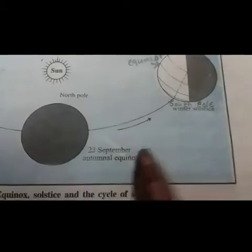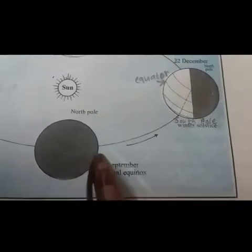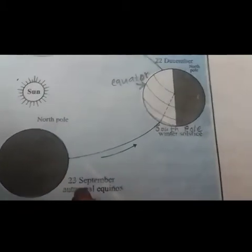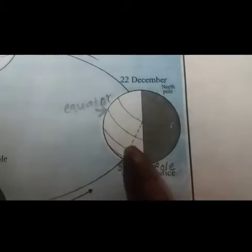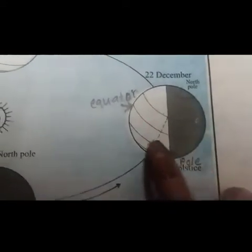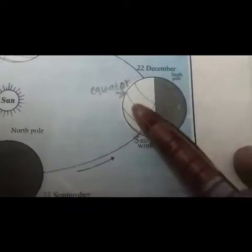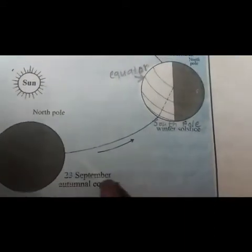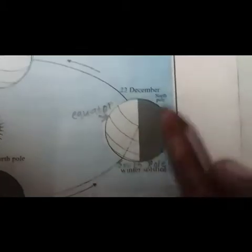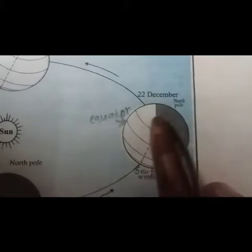On 23rd September, the day duration and night duration are equal on the surface of the Earth — this is called the Autumnal Equinox. From 23rd September to 22nd December, the Southern Hemisphere faces the Sun, and the daylight duration in the Southern Hemisphere increases. As a result, due to more heat or energy received from the Sun, the Southern Hemisphere experiences Spring season. In the same duration, the night duration increases in the Northern Hemisphere, and as a result this hemisphere experiences Autumn season.